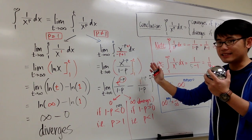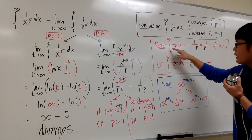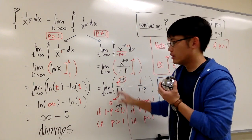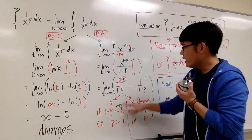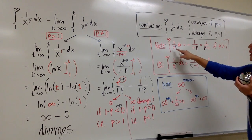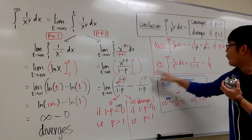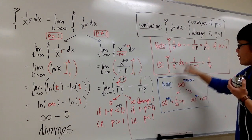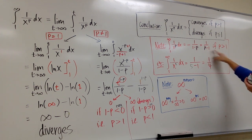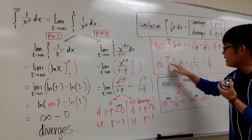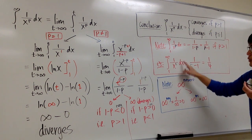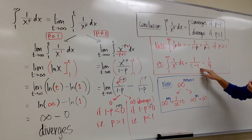In conclusion, the integral from 1 to infinity of 1 over x to the p power dx converges only when p is greater than 1. When it converges, the t term goes to 0, leaving negative 1 over 1 minus p evaluated at x equals 1, which simplifies to 1 over p minus 1. This formula gives the value of the integral whenever p is greater than 1.